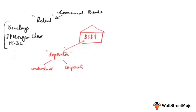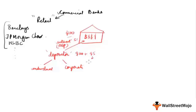In return, depositors get two things: their money is kept safe, and they earn interest on their deposits. For example, if you deposit $100 and the interest rate is 5%, at the end of one year the bank will pay you back your $100 plus $5 in interest, giving you $105 total.